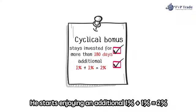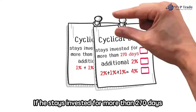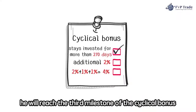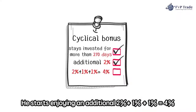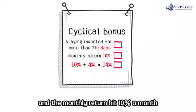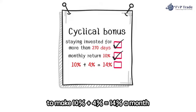If he stays invested for more than 180 days, he reaches the second milestone and enjoys an additional 2% on top of his usual monthly PAM returns. If he stays invested for more than 270 days, he reaches the third milestone and enjoys an additional 4% on top of his usual monthly PAM returns. If he selected the high risk option and the monthly return hit 10%, staying invested for more than 270 days allows him to make 10% + 4% = 14% a month.